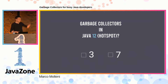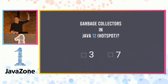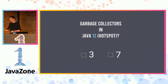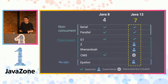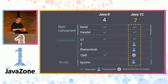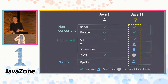So, who would say three garbage collectors? Please raise your hands. A few of you — seven garbage collectors? A bit more. So you know you have the correct answer. In Java 12, we have seven garbage collectors. Two are non-concurrent, four are concurrent, and one is no-ops. We will look at all of this during this presentation.